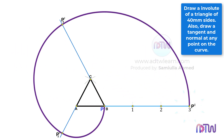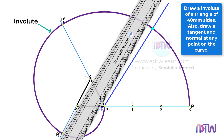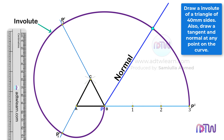This is the final involute of a triangle. Apart from this, we need to draw a tangent and a normal at any point on this curve. To do so, we will consider a point on this curve and draw a tangent and a normal at this point. Using this point as a reference, draw a line up to point B — this line will be normal to the curve. After this, draw a perpendicular line to this normal line, which will be the tangent line.